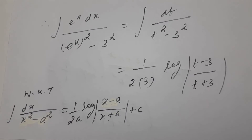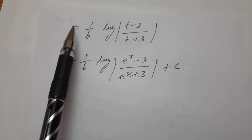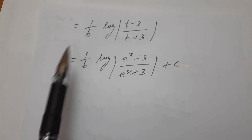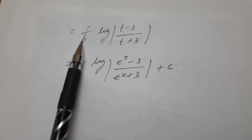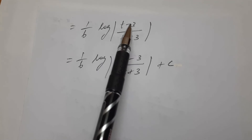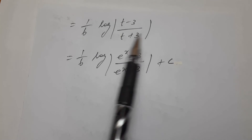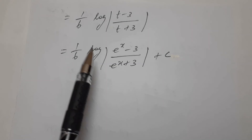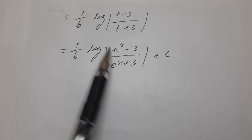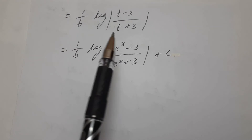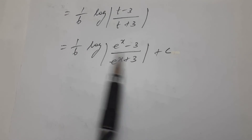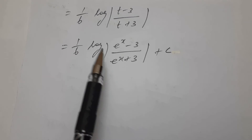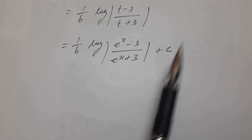Now applying the t value: this equals 1 by 6 — since 2 times 3 is 6 — so 1 by 6 log of t minus 3 divided by t plus 3. Therefore the answer is 1 by 6 log of e power x minus 3 divided by e power x plus 3, plus c.